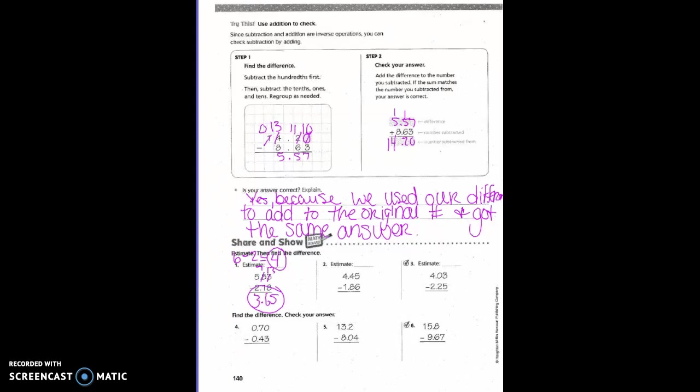Next one. Four and 45 hundredths — what would we round that to? 4, because the 4 is lower than 5. One and 86 hundredths — we round to 2, because the 8 is 5 or higher. So 4 minus 2 is 2.